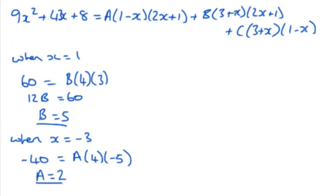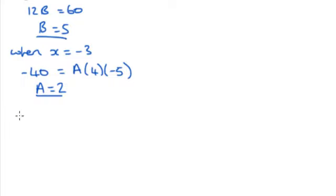And then finally to find C, we're going to let x equal -1/2. So I'm going to use my calculator again for the left hand side. All I need to do now is type in -1/2, press up on my calculator to get that last sum, and press equals. And we get -45/4 on the left.